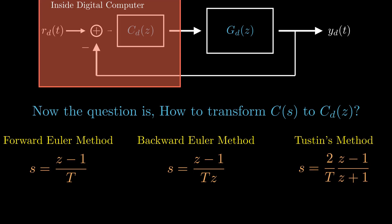And then the Tustin's method or bilinear transformation method involves substituting s with 2 times z minus 1 divided by T times z plus 1.